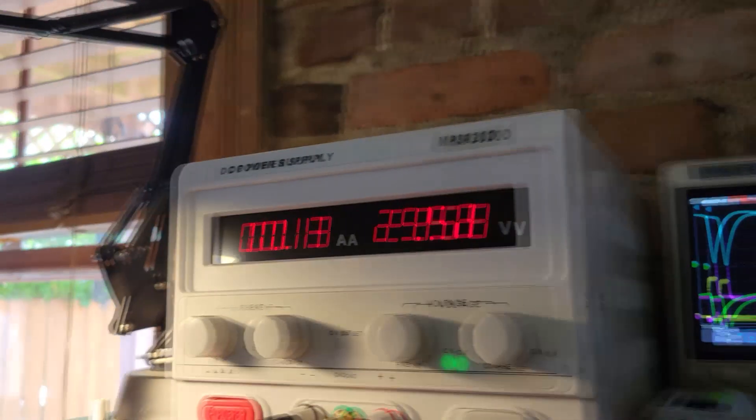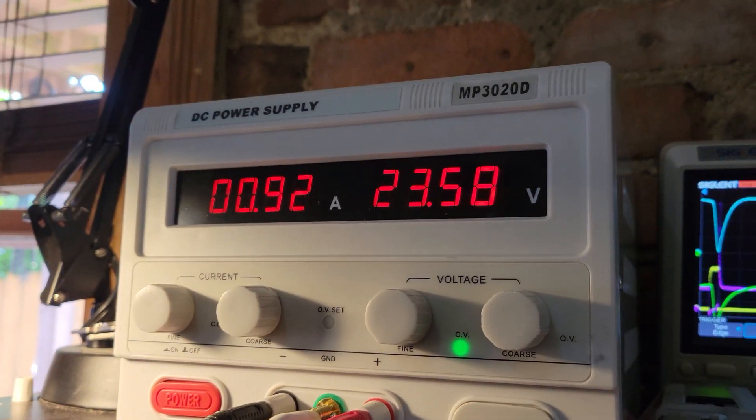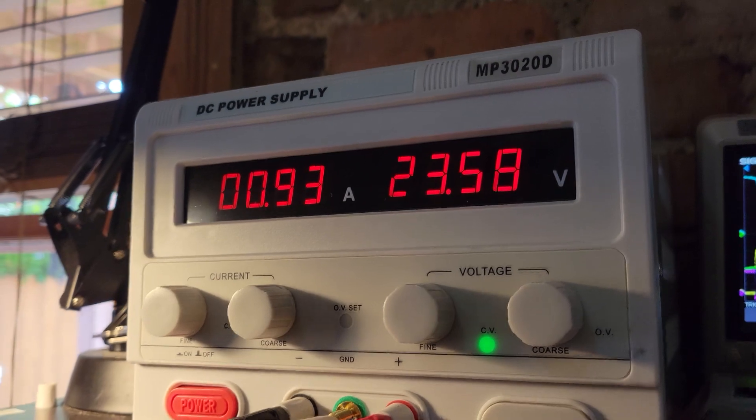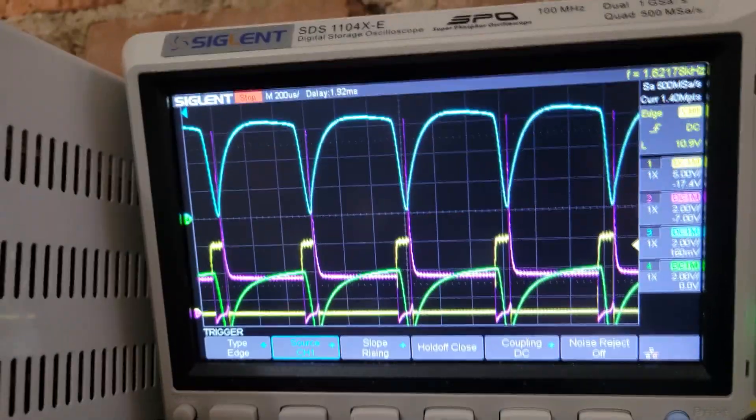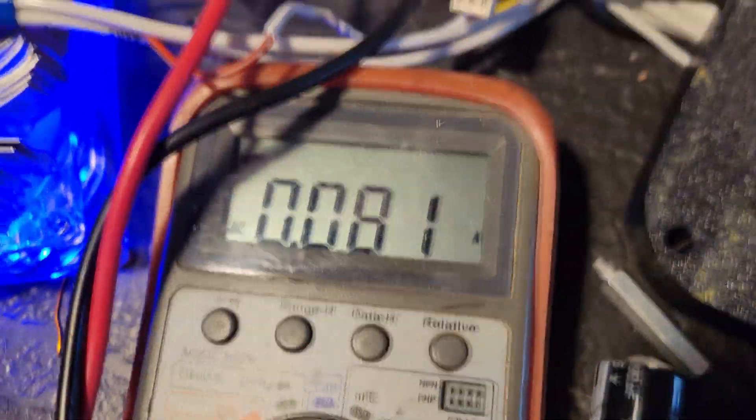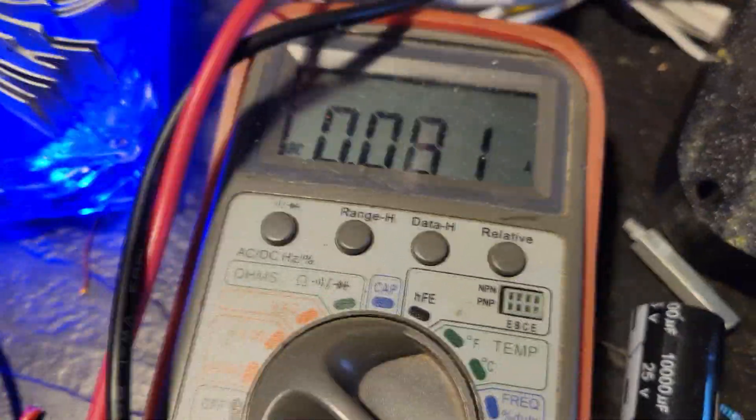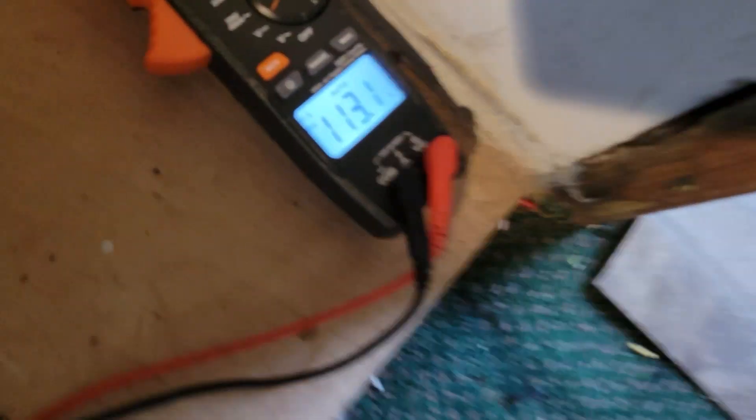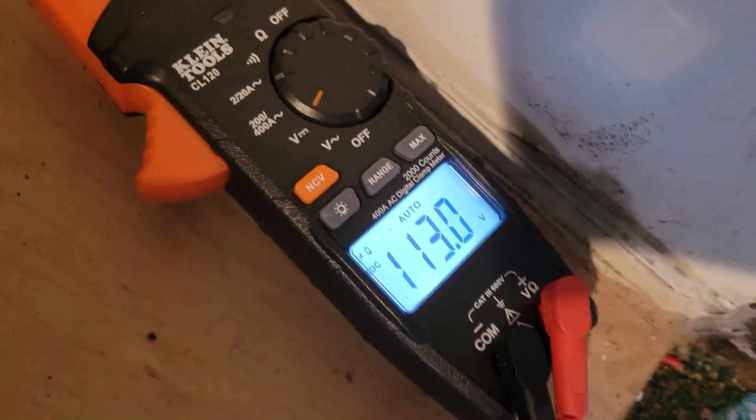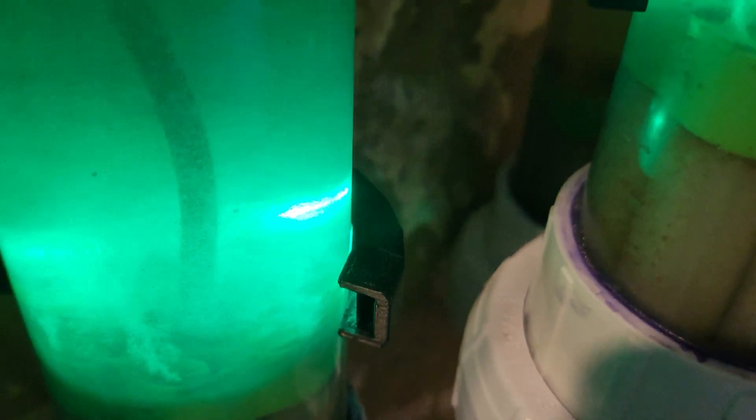So here again, we're only consuming 1 amp. We're getting the waveform we want. We have milliamps across the cell, or into the cell rather. And we've got 113 volts across the cell producing gas.